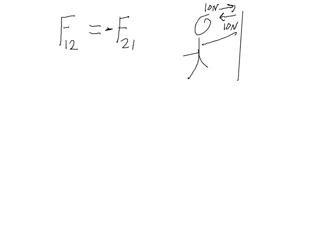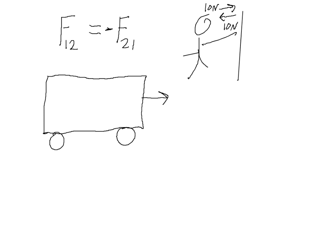Let's discuss an example that illustrates just how surprising Newton's Third Law can be. Here's a bus going down the interstate at 60 miles an hour, and also flying along the highway is a fly. The bus and the fly have a collision. The bus wins, of course — the fly goes splat, and the bus barely even notices, probably just a smudge on the windshield.